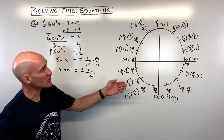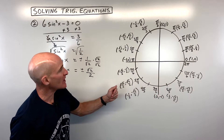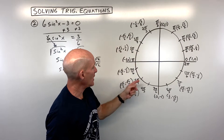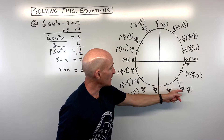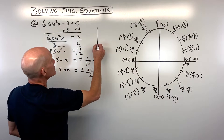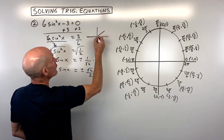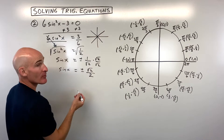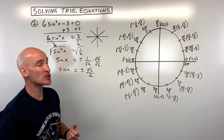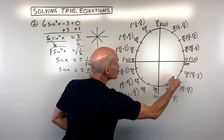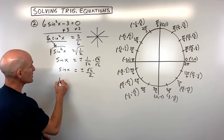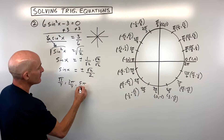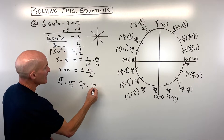The sine on the unit circle corresponds to the y-coordinate. So we're asking where is the y-coordinate equal to square root of two over two or negative square root of two over two. That's going to be at four locations: pi over four, three pi over four, five pi over four, and seven pi over four. If the instructions say find solutions between zero and two pi, you would list those four angles.